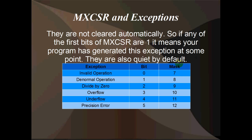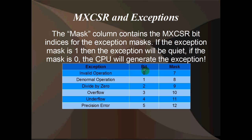Exceptions are also quiet by default. Usually the CPU is just going to skip over the exceptions — it's going to set the flag bit, but it's not going to throw the exception. Which is where the mask column comes in. The mask column contains the MXCSR bit indices for the exception masks, and by default these are all 1. Which means that when the floating point exception occurs, the CPU doesn't tell you — it just keeps going, sort of pretends it didn't happen. It sets the bit and keeps going.